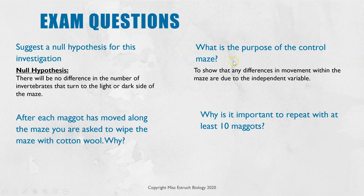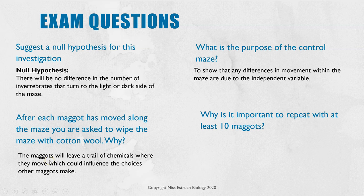The next question is: what is the purpose of the control maze? A control experiment is always to show that any differences you see are due to the independent variable — in this case, to show that differences in the directions invertebrates move are just due to the light and dark conditions. Another question: why do you have to wipe the maze clean with cotton wool between each trial? Because woodlice, maggots, or whichever invertebrates can leave a trail of chemicals and debris, which can be detected by future invertebrates and influence their choice, so you can't be sure your results are due to light and dark rather than previous tracks.